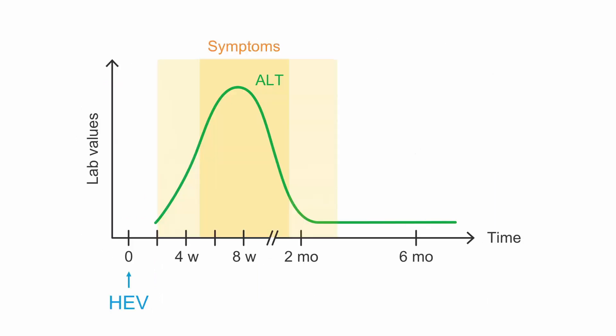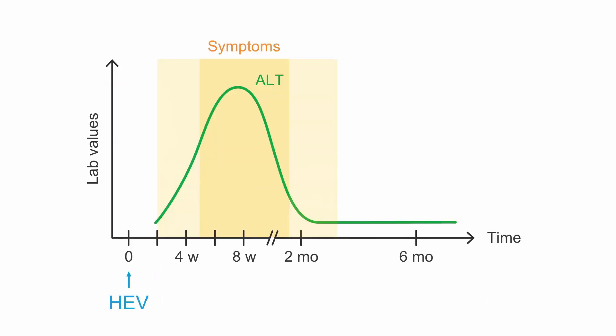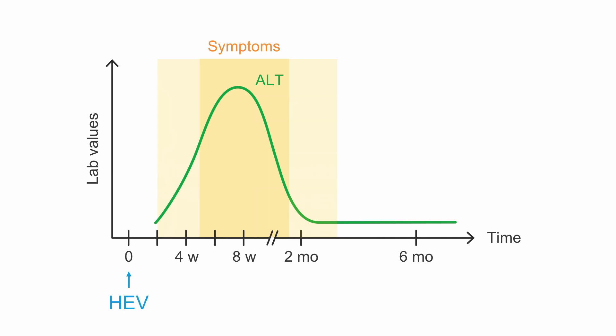So what's your diagnosis? Hannah has no history of immunosuppression. So let's take a look back at the graphic dealing with immunocompetent patients. Her ALT is very high, which signifies serious liver damage.